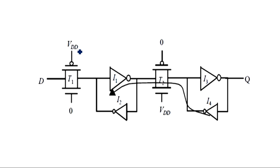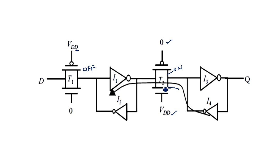Let us examine the reverse operation. If VDD is applied to the PMOS and zero to the NMOS, transistor T1 is completely off. Transistor T2 is on because zero is at the PMOS gate and VDD at the NMOS gate, so that transmission gate is on and current flows in the reverse direction. If the first transmission gate is on and the second is off, current should be transmitted in the forward direction.